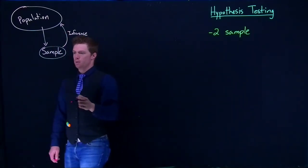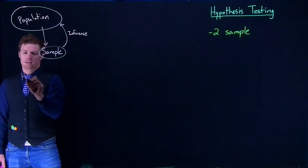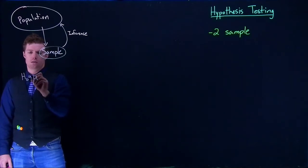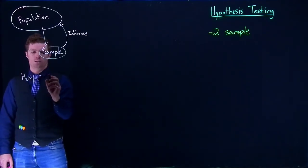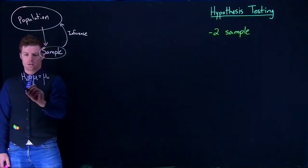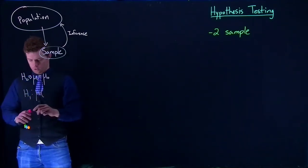Previously, with our null hypothesis, we've said that the true mean is equal to some value. Then our alternative has been that the true mean is either going to be